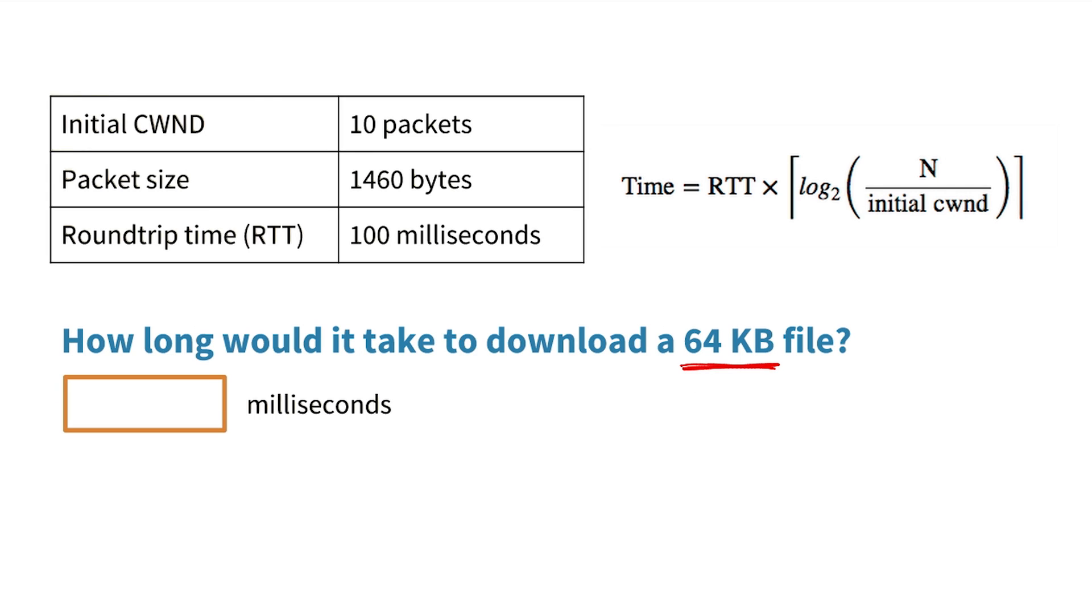All right, let's see if we can make some sense of this. First, we convert 64 kilobytes into bytes by multiplying by 1,024 bytes, which is 65,536 bytes.